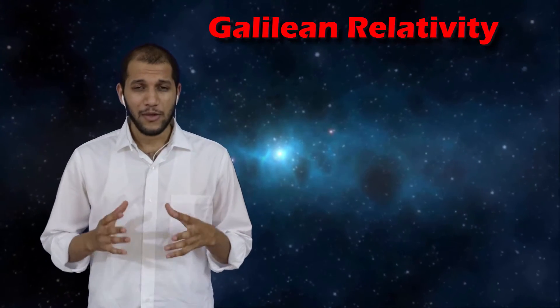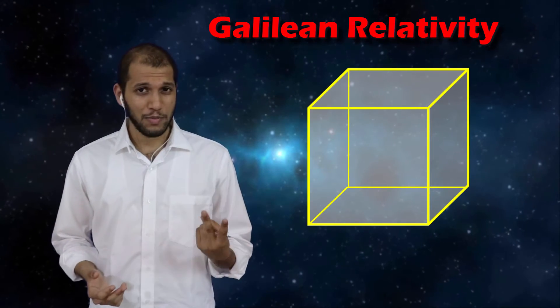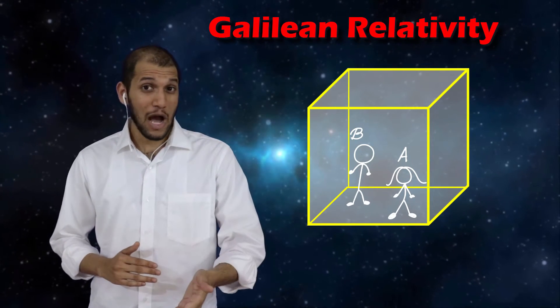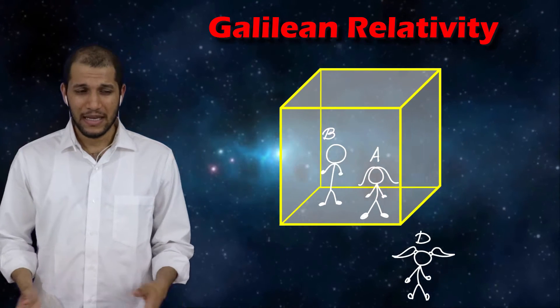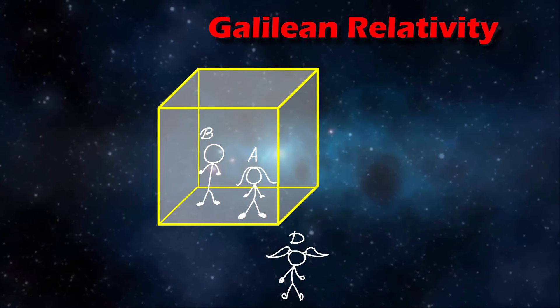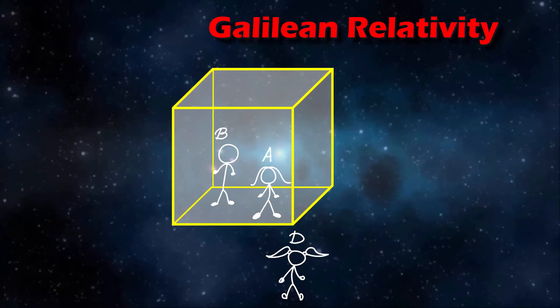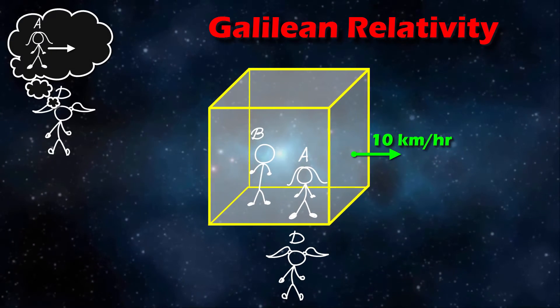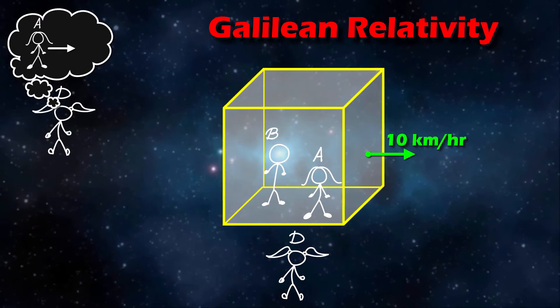Alright, now the key to understanding motion and forces is to understand something called Galilean relativity, and the way it works is like the following. Imagine you have a box and inside this box there are two people, Alice and Bob. As a third person who's floating outside the box, let's call her Divya. Now Divya reports that the whole box along with Alice and Bob are moving towards the right with a speed of 10 kilometers per hour. So according to her, Alice is moving at 10 kilometers per hour towards the right.